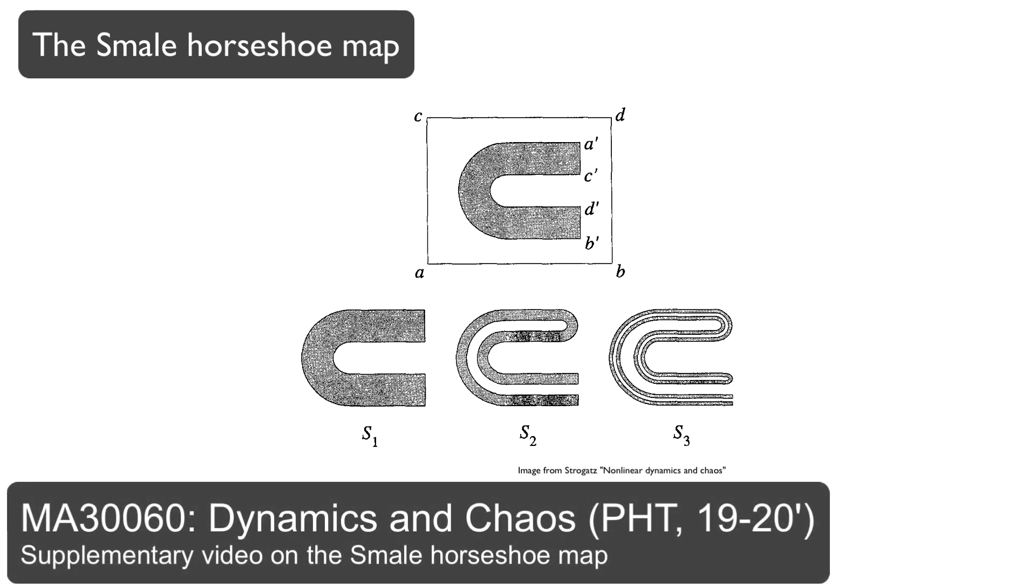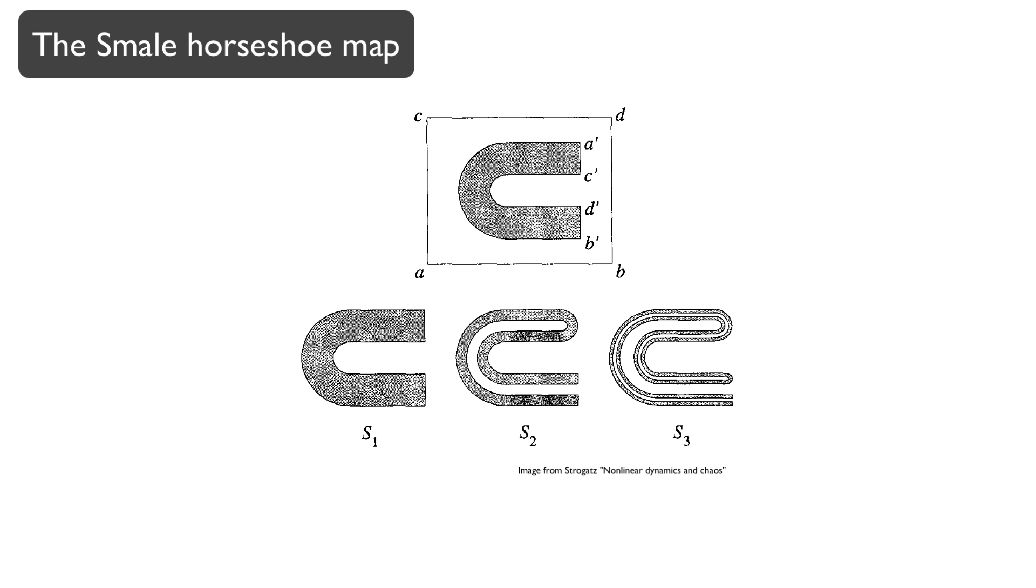The Smale-Horseshoe map was introduced in 1967 by American mathematician Stephen Smale and provides a motivating example of how chaotic dynamics can arise in two-dimensional maps.